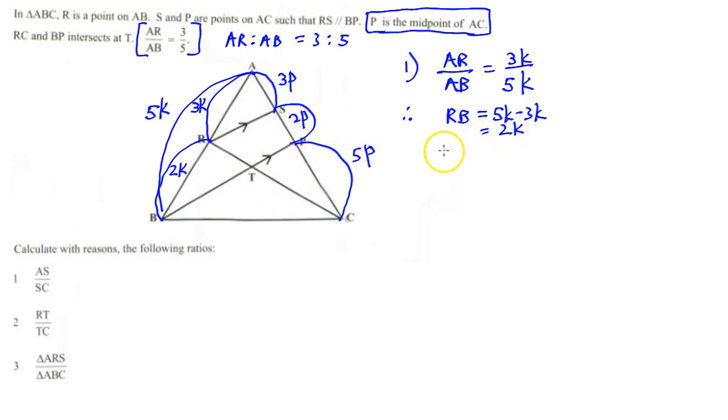Now we can go across and we can say that this implies that AS over SP is equal to 3p over 2p. And now we can write our lines being parallel - that RS is parallel to BP, and that's our proportion theorem.